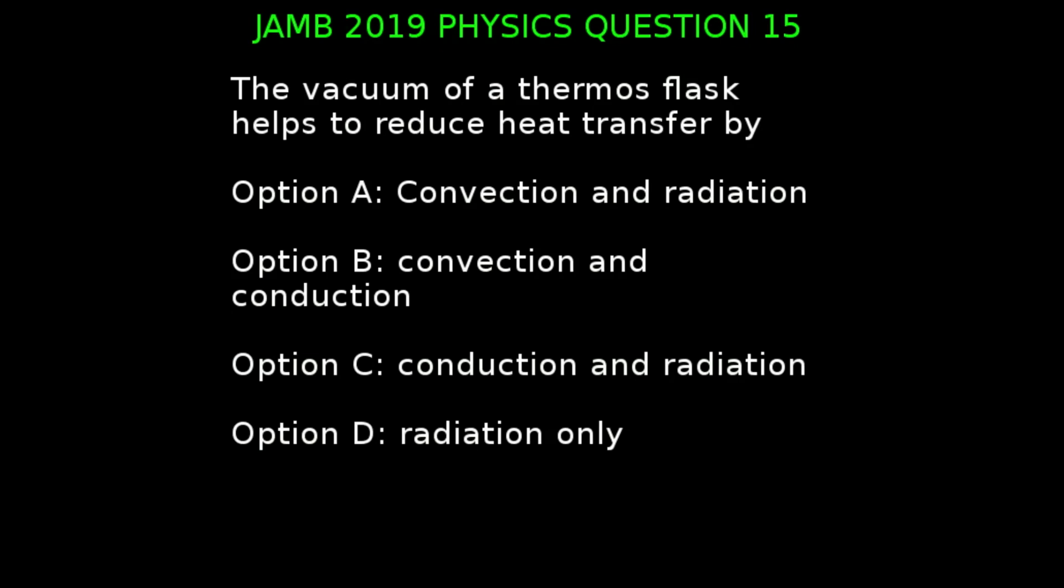The correct answer to this question is option B, which is convection and conduction. This is because the thermal flask has double walls and the vacuum between the two walls helps to prevent heat transfer from the inside of the flask to the outside by convection and conduction.